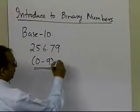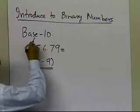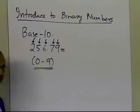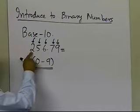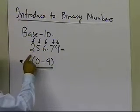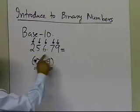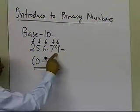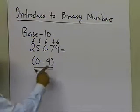If you look at this number, each digit has a place in the number itself. So for example, 2 stands for 200, 5 stands for 50, and 6 is your single digit. Then 7 is one tenth multiplied by 7, and 9 is one hundredth of whatever that place number is.